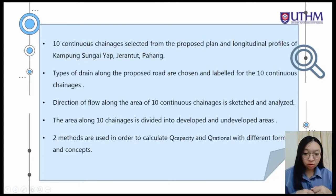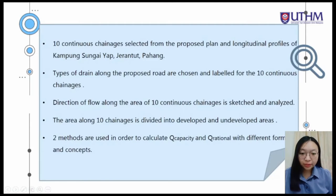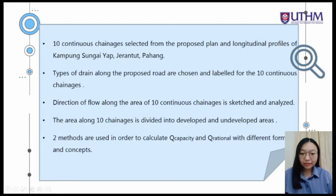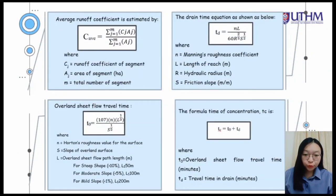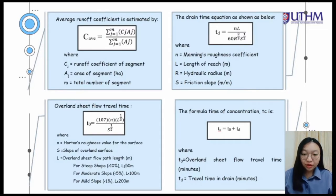At the same time, the area along the 10 continuous chainages is divided into developed area and undeveloped area before the calculation of area. The sub-catchment area also needs to be found. Two methods are used to calculate the rational flow rate and the capacity flow rate with different formulas and concepts, before comparison is made in the data analysis. Segments of different land use within the sub-catchment can be combined to produce an average runoff coefficient, where CJ is the runoff coefficient of segments and AJ is the area of segment in hectares, and M is the total number of segments.